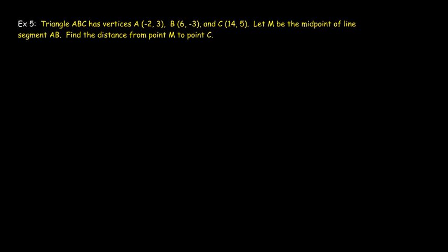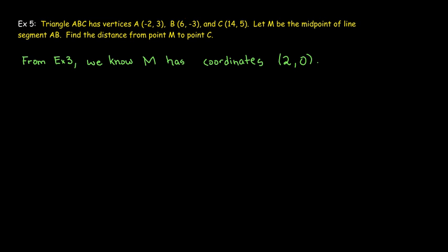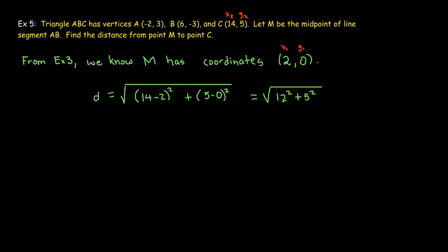Now using the midpoint M = (2, 0) found in the previous example, let's find the distance from M to point C at (14, 5). With x₁ = 2, y₁ = 0, x₂ = 14, y₂ = 5, we plug into the distance formula and get the square root of 12 squared plus 5 squared, which is the square root of 144 + 25 = the square root of 169, which equals 13.